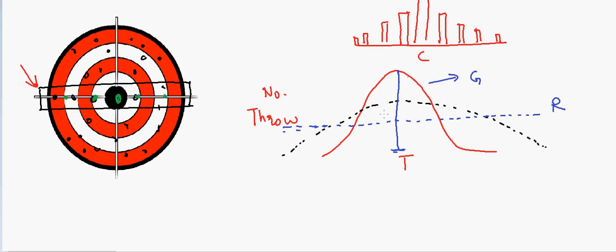So we use this distribution to understand certain events which happen in science or in our daily life, in politics, or even in economics, in share market. So this concept is used a lot.